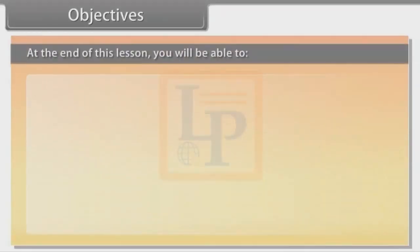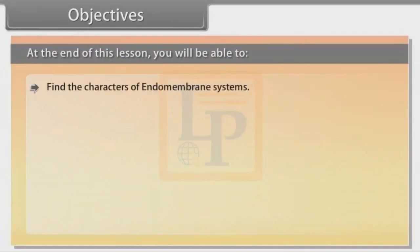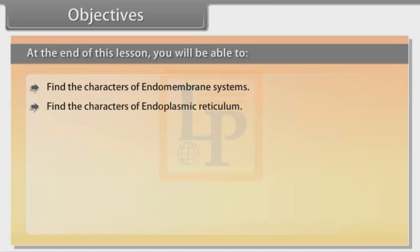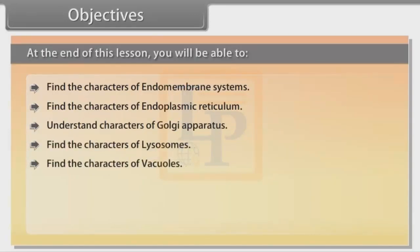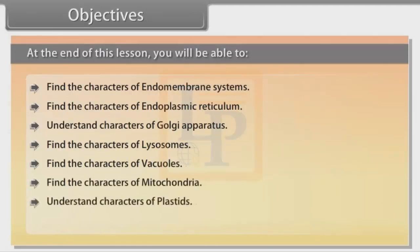At the end of this lesson you will be able to find the characters of endomembrane systems, find the characters of endoplasmic reticulum, understand characters of Golgi apparatus, find the characters of lysosomes, find the characters of vacuoles, find the characters of mitochondria, understand characters of plastids, and find the characters of ribosomes.